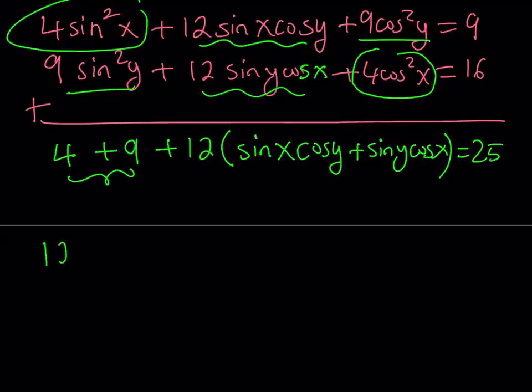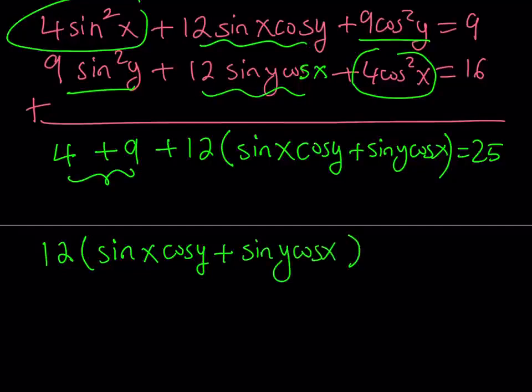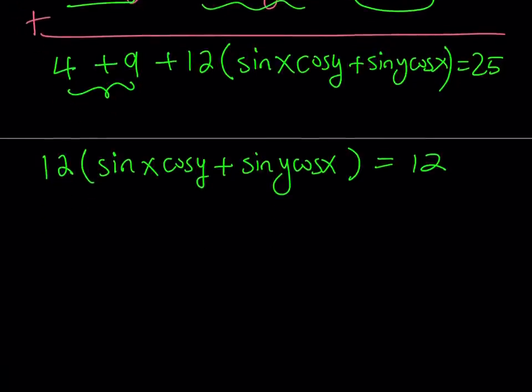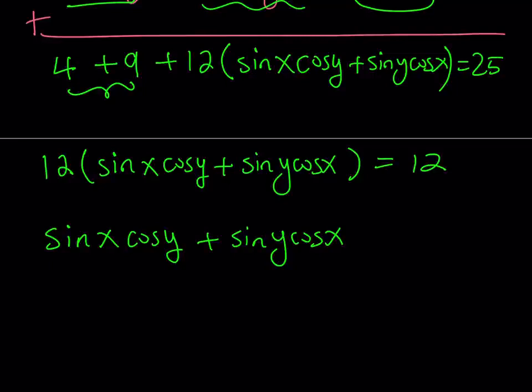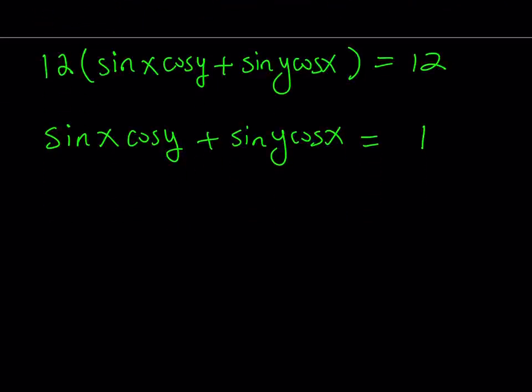So, I'm basically getting 12 times this quantity, sine x cosine y plus sine y cosine x is equal to 12. Great. So, we can divide both sides by 12, and we end up with a simpler expression. But now, what is that expression equivalent to? Now, you need to know the trigonometric identities, and there's a lot of them. But, of course, there are some patterns that you can take advantage of. For example, this one is the sine of x plus y. It's a sum formula that you do definitely need to know. And if you didn't, now hopefully you know, and you start memorizing.